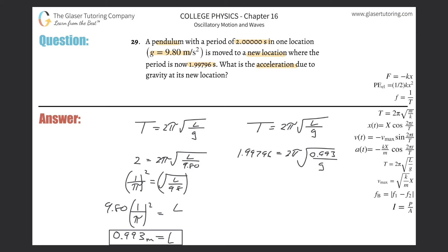So first thing is we're going to divide by the 2π. So it's 1.99796 divided by then parentheses 2 times π. So we're going to get a value of about 0.318 and that's going to equal then square root of 0.993 all divided by g.